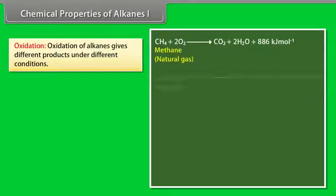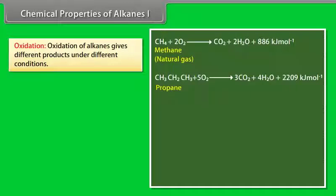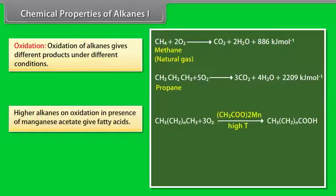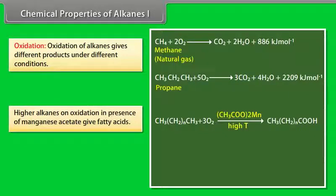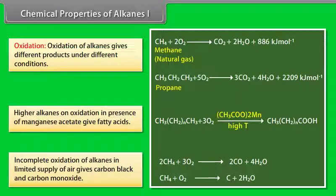Oxidation: Alkanes on heating in the presence of air or dioxygen are completely oxidized to carbon dioxide and water with the evolution of large amount of heat. Higher alkanes on oxidation in presence of manganese acetate give fatty acids. Incomplete oxidation of alkanes in limited supply of air gives carbon black and carbon monoxide. 2CH4 + 3O2 gives 2CO + 4H2O. CH4 + O2 gives C + 2H2O.